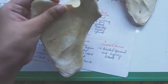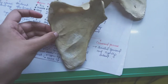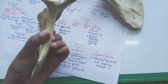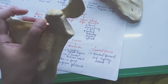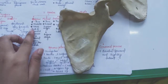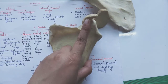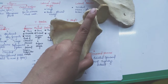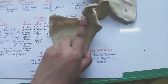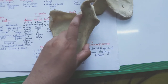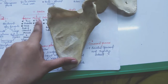This one is the superior border, this one is the medial border, and this one is the lateral border. The superior border is thin and short. Near the root of the coracoid process it has the suprascapular notch.